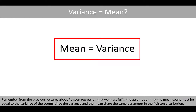Remember from the previous lectures about Poisson regression that we must fulfill the assumption that the mean count must be equal to the variance of the counts, since the variance and the mean share the same parameter in the Poisson distribution.